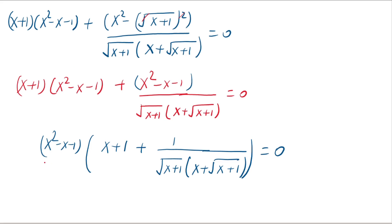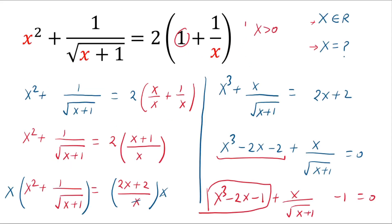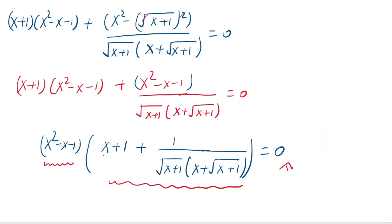The product of this expression and the whole bracket equals 0. But since x is positive, x plus 1 is positive, square root of x plus 1 is positive, and the entire bracket expression is positive — it cannot equal 0. Therefore x squared minus x minus 1 must equal 0.